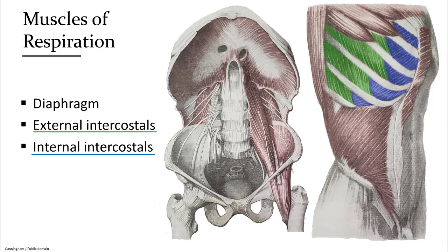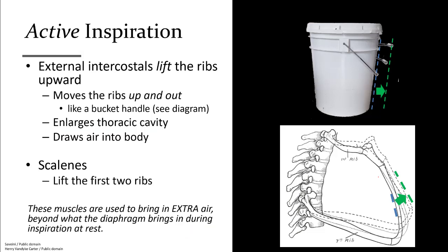The intercostal muscles also aid in respiration. The external intercostals in green help elevate the ribs by expanding the thorax and bring more air in. The internal intercostal muscles in blue help pull the ribs back together and force more air out during expiration. The effect of the external intercostals is demonstrated by a bucket handle analogy: when in a deflated position, the handle and ribs are downward. External intercostal muscles pull on the ribs lifting them, and just like a bucket handle lifting up and away, this effectively enlarges the thoracic space pulling more air in.